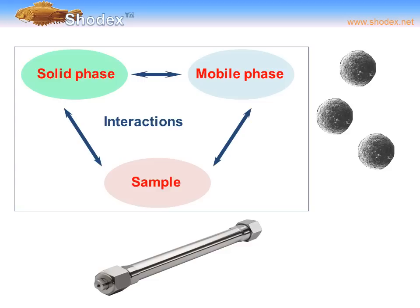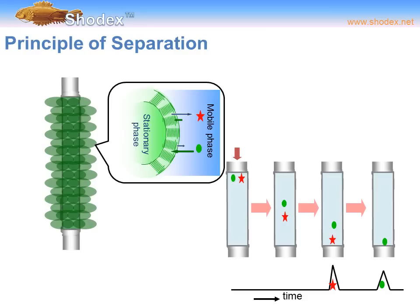High-performance liquid chromatography, or HPLC, involves the mutual interactions between the solid phase and the sample, the sample and the mobile phase, as well as the mobile phase and the solid phase.